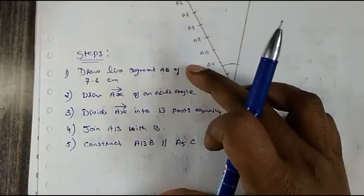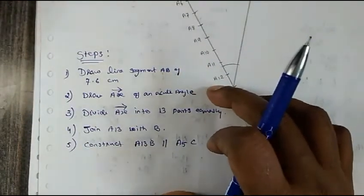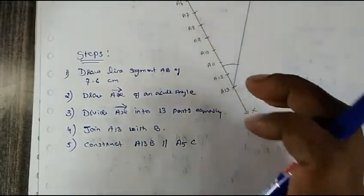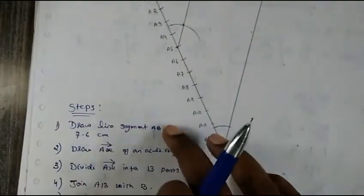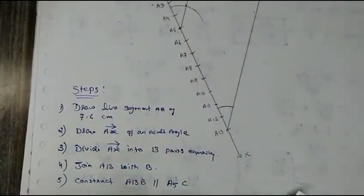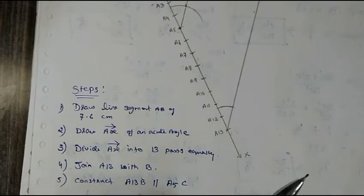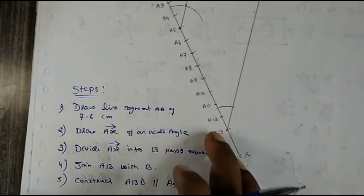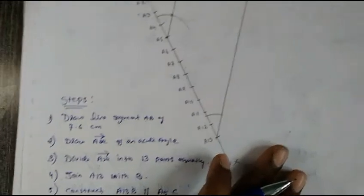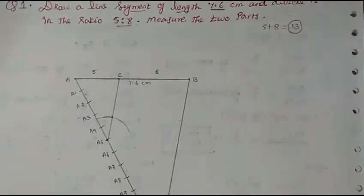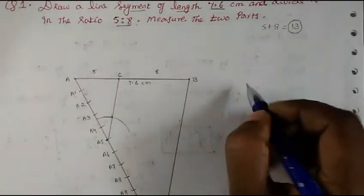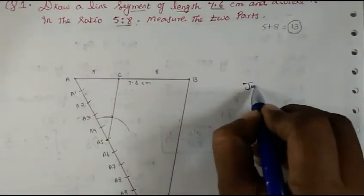Steps are compulsory — write them in your own words, as you performed the construction. Nobody is going to read in detail, but steps must be written. After that, if justification is asked, only then do the justification.